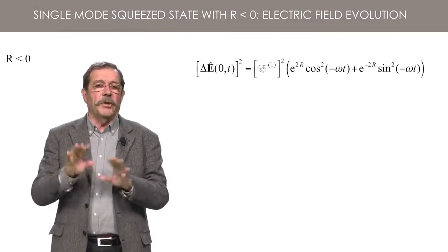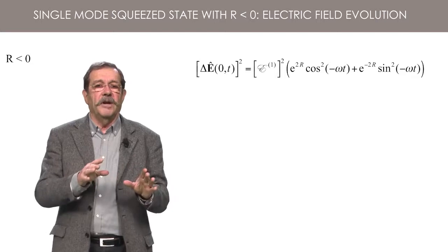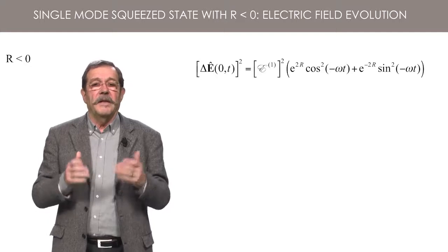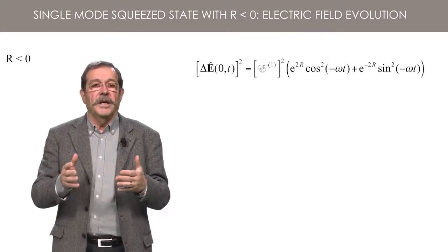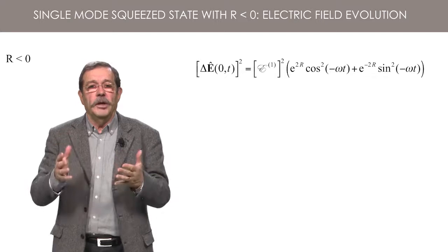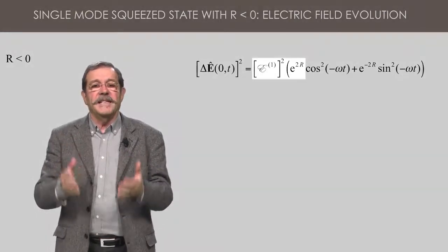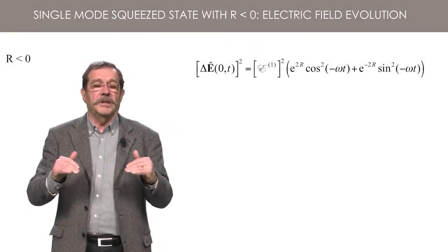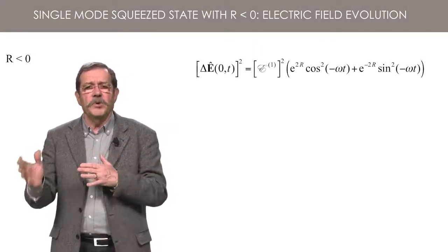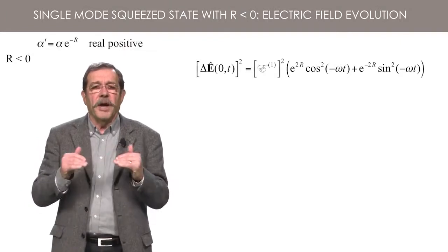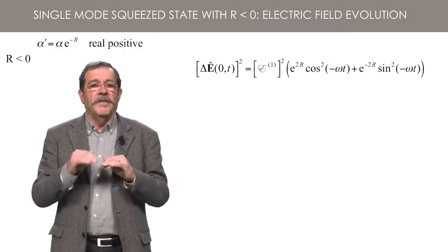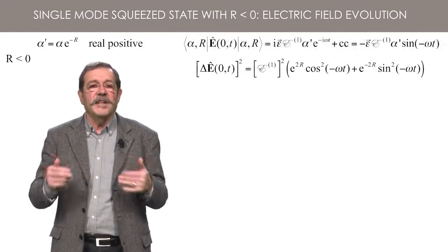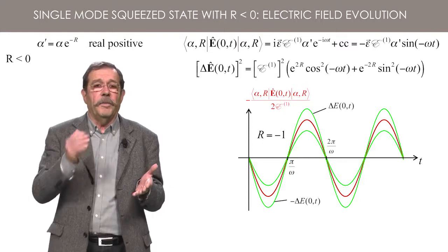One must distinguish the cases of R positive or negative. Let us first consider the case of R negative. Then, at times such that sin omega t is null, the variance is less than E1 squared. To be specific and have simple expressions, we take alpha real positive so that alpha prime is also real and positive. The average value of the field then evolves as sin omega t as shown in red on the plot.